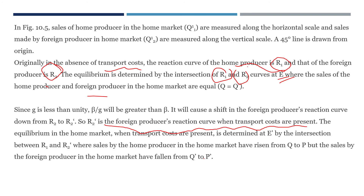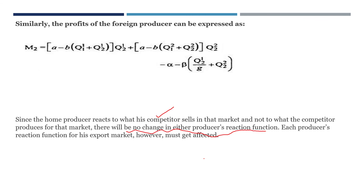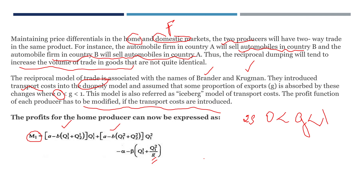This is what is called reciprocal dumping, and this figure refers to the home producer's market. If you have any doubts or clarifications regarding any topics covered, please comment in the comment section below. If you are benefiting from the lecture, please share it with your friends and subscribe to the channel. Enjoy learning and God bless you all. Thank you so much.